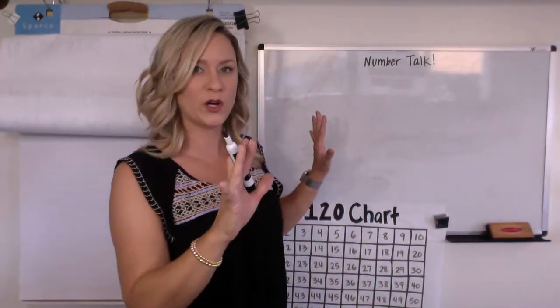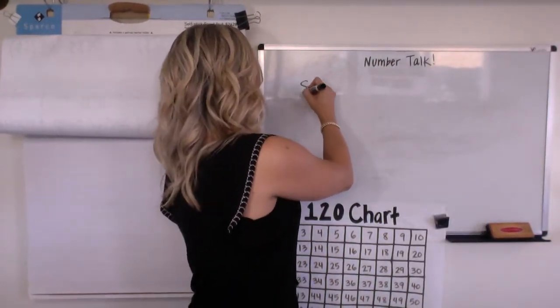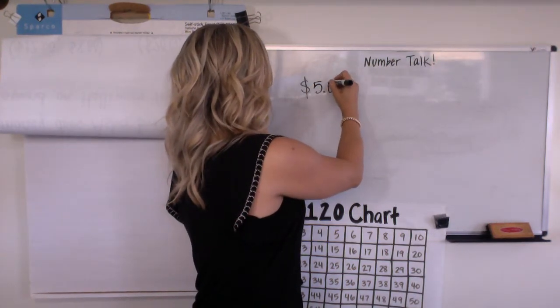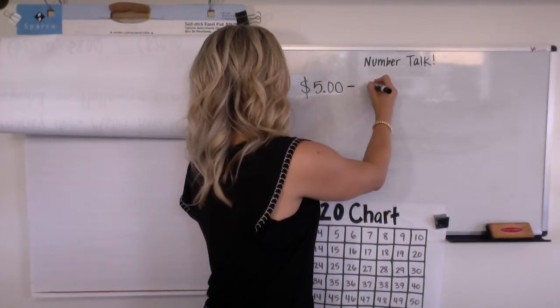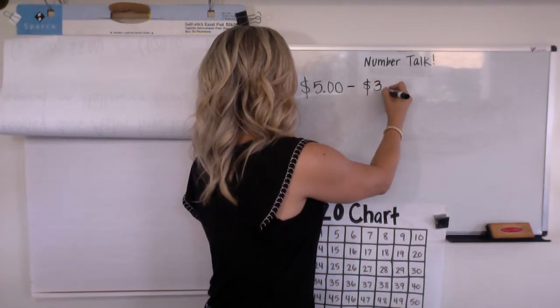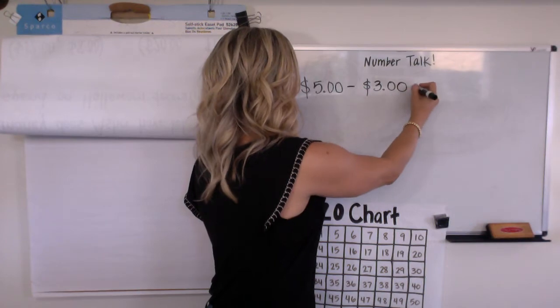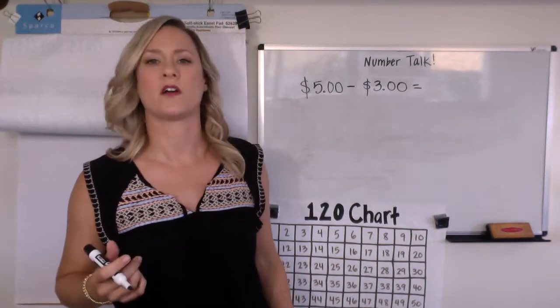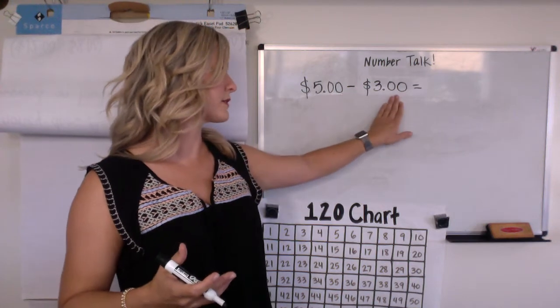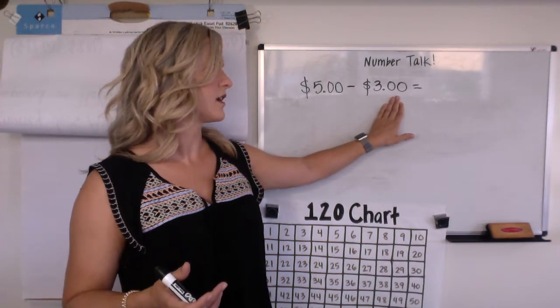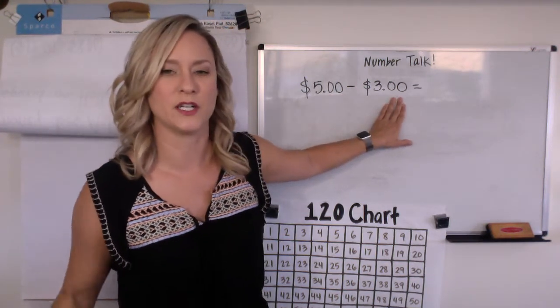Let's get going. All right, whoa, stand back everybody, Mrs. Compton's on the loose. Five dollars minus three dollars makes what? All right, so think about that in your head. Five dollars minus three dollars. On the count of three, I want to hear it. One, two, three, tell me, show me.